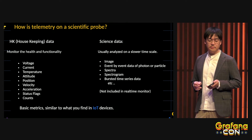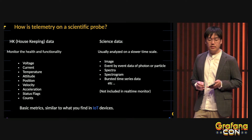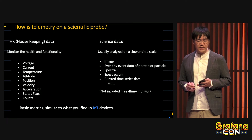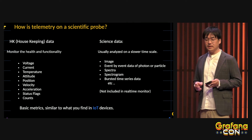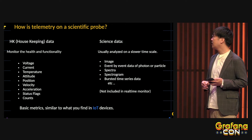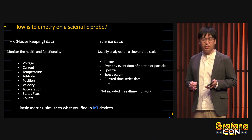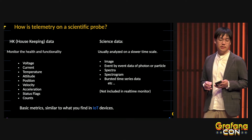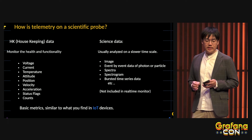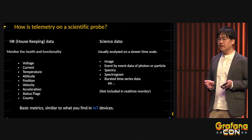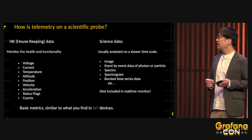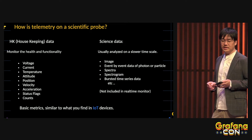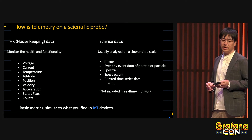How is the telemetry of space science probes structured? We have two types of data. One is housekeeping data; the other is scientific data. Scientific data includes images, event-by-event data, and spectra, but it is usually analyzed over longer time scales — so it's not time-critical and we don't include it in real-time monitoring. Housekeeping data, on the other hand, is used to monitor health and functional status. It includes voltage, current, temperature, attitude, position, velocity, acceleration, status flags, and counts — basically standard metrics, similar to what you'd find in IoT devices.